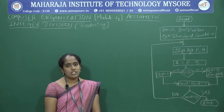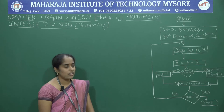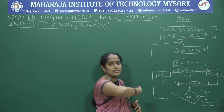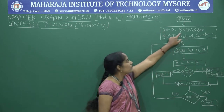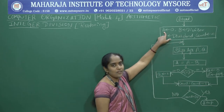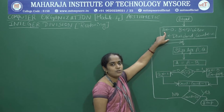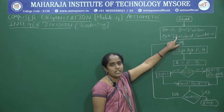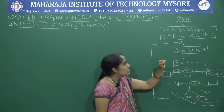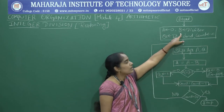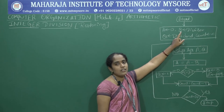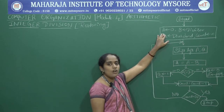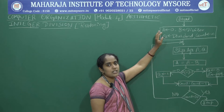Now let's see the flowchart of the integer division restoring algorithm. In that, we have four important registers: A, B, Q, and count. A will be initialized to 0. B will contain the divisor value. Q will contain the dividend value. Count will contain the N value. A depends on the B value — if the divisor value contains 4 bits, then A is initialized to 5 zeros.